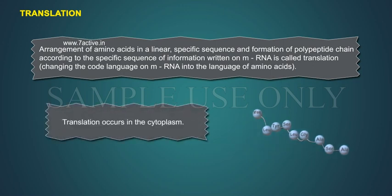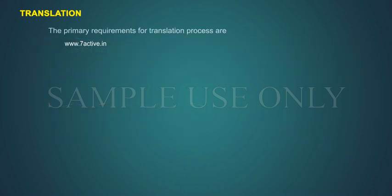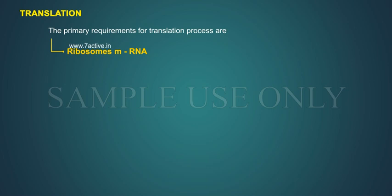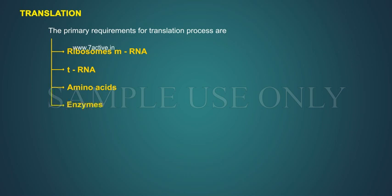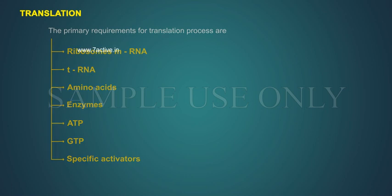Translation occurs in the cytoplasm. The primary requirements for the translation process are ribosomes, mRNA, tRNA, amino acids, enzymes, ATP, GTP, and specific activators.